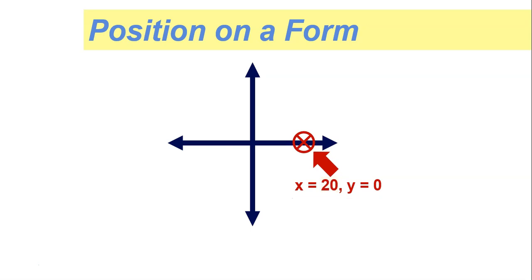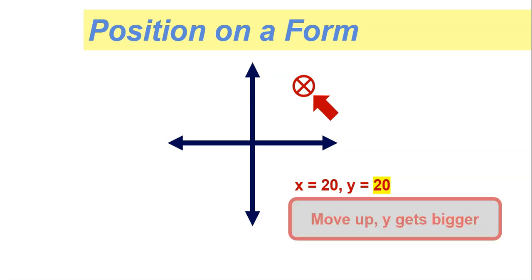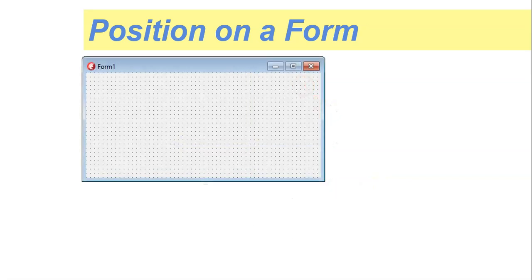What happens if I move that little point up? If I go up, we are affecting the y value, because the y value is how we determine the up and down value of that particular point. The y value will now increase — let's say, for example, 20. So moving up, the y value gets bigger, and obviously the reverse: if I move down, the y value gets smaller.